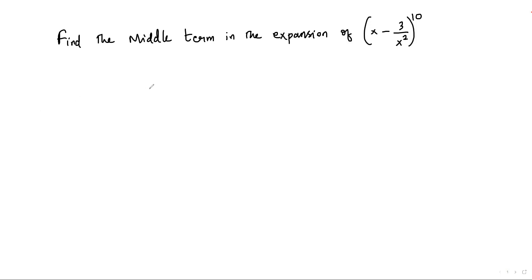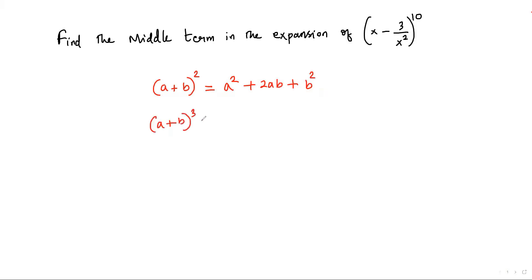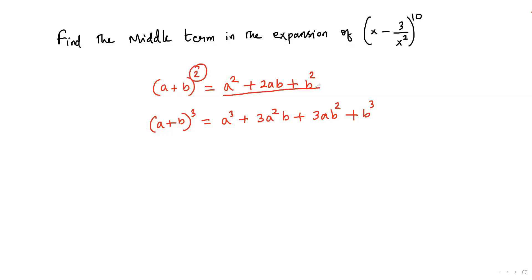Consider the algebraic identity (a + b)², whose expansion is a² + 2ab + b². Consider another algebraic identity (a + b)³, which equals a³ + 3a²b + 3ab² + b³. In the first one the exponent of the binomial is 2 and the expansion contains three terms; in the second one the exponent is 3.